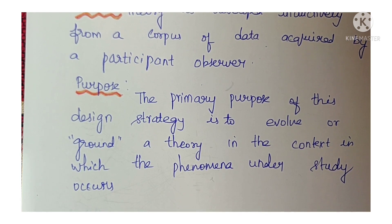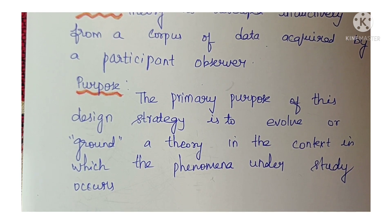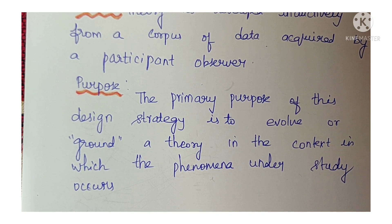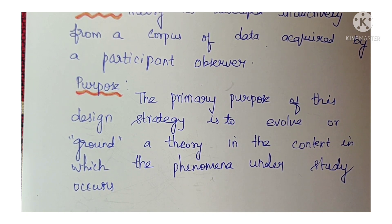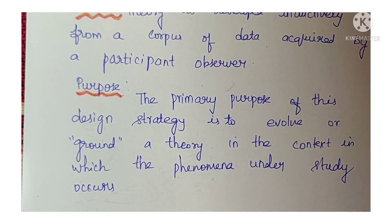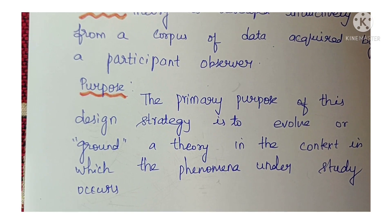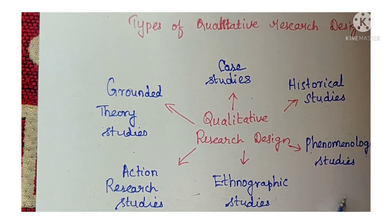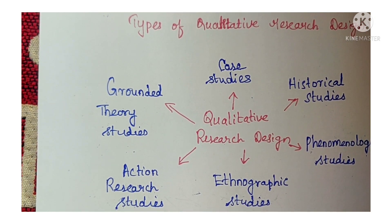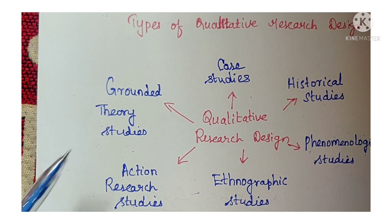So in qualitative research design, you have six types: case study, historical study, phenomenological study, ethnographic study, action research study, and grounded theory study.